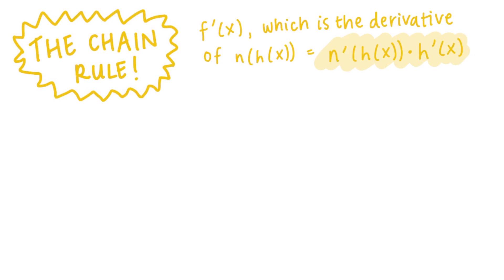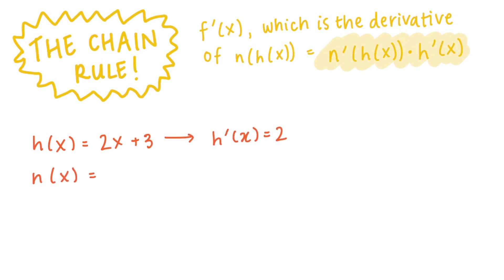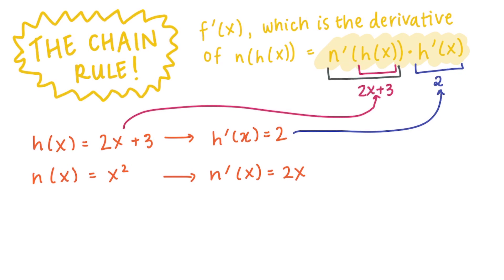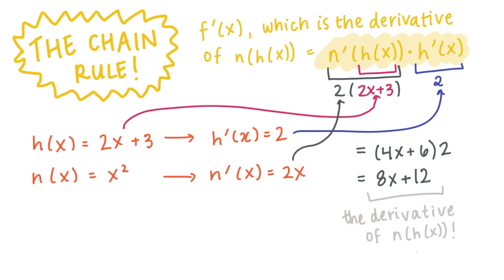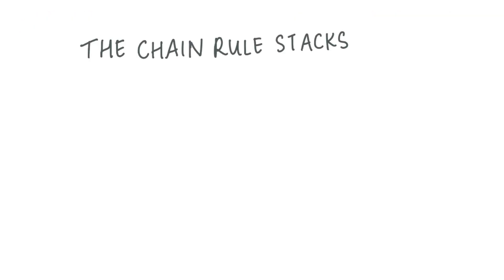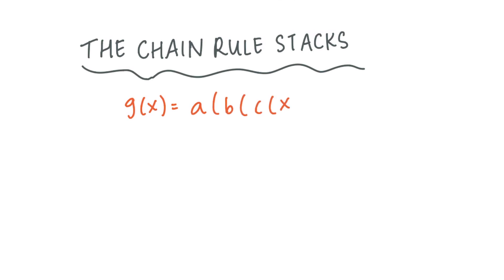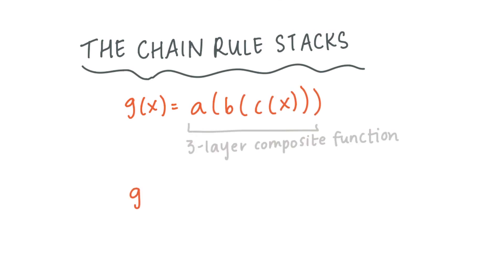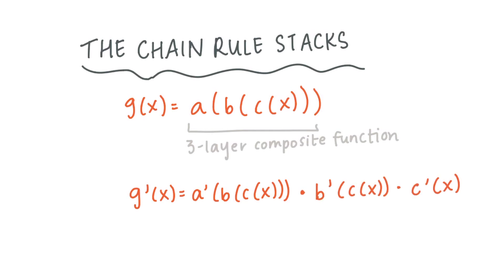Let's try to use the chain rule for the example we saw earlier. h(x) is 2x + 3, so its derivative is 2. n(x) is x squared, so its derivative is 2x. Now we can plug these values into the chain rule, which lets us calculate the derivative of the composite function much faster. The chain rule also stacks without limit — if you have a three-layered composite function it works the same way, and you could extend this to a four-layer composite function and so on.